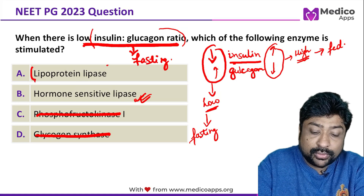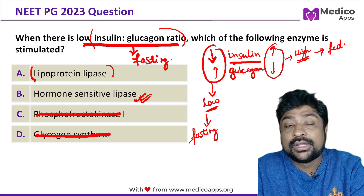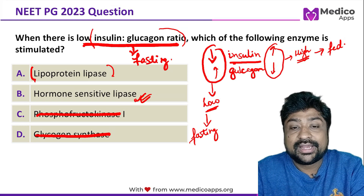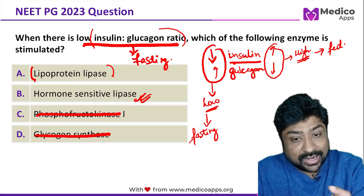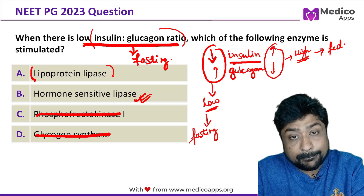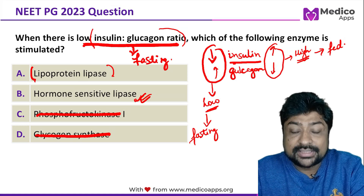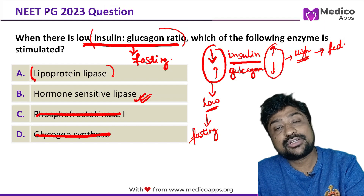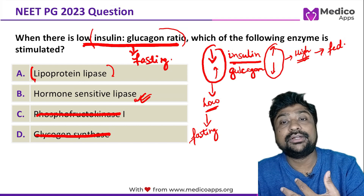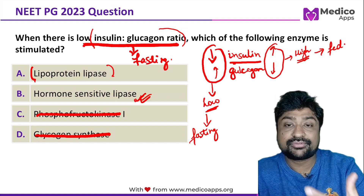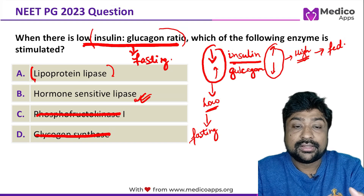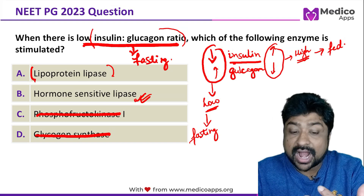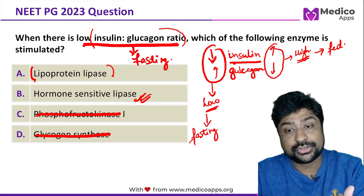What about lipoprotein lipase? This is also a lipase, but it is very unique because it plays a key role in hydrolyzing triglycerides — specifically when free fatty acids need to be taken up by tissues. When there is excess free fatty acid in the body, it is transported to peripheral tissues, especially the heart, muscle, and adipose tissue.